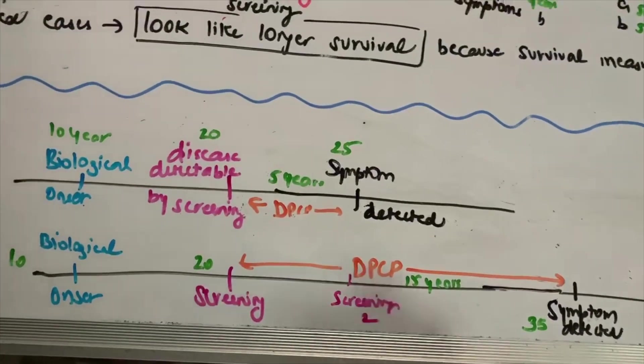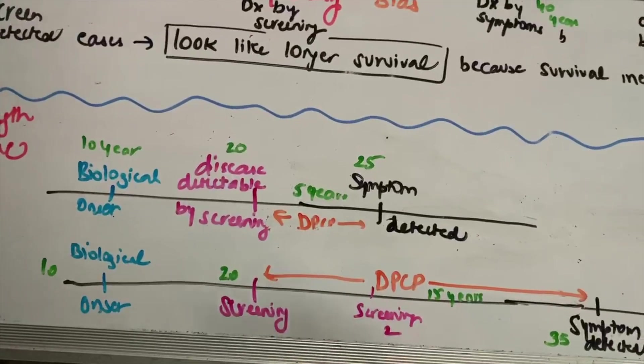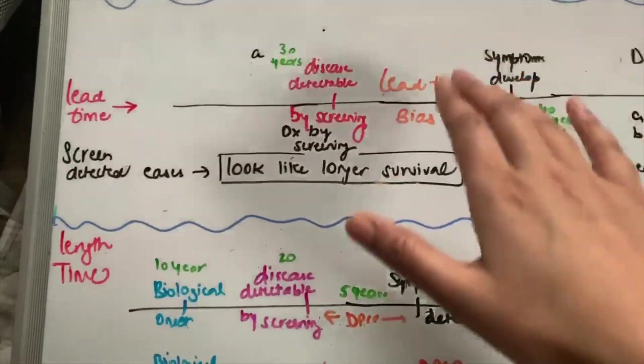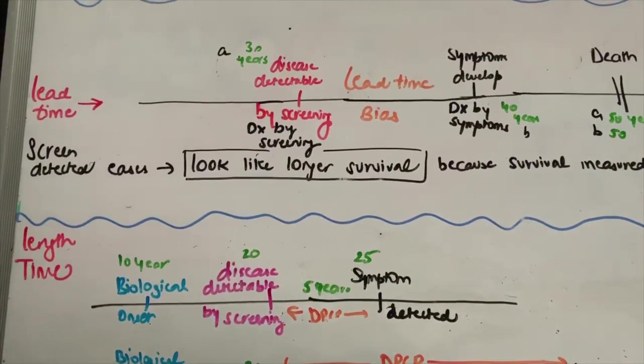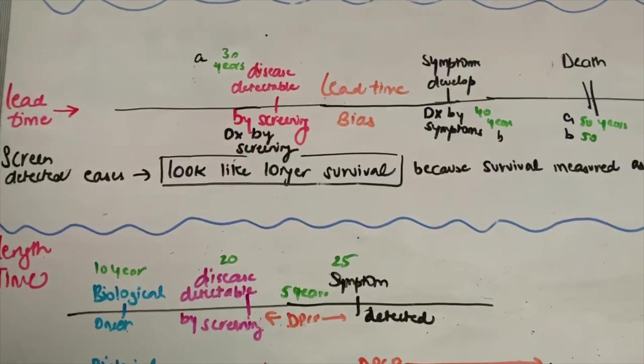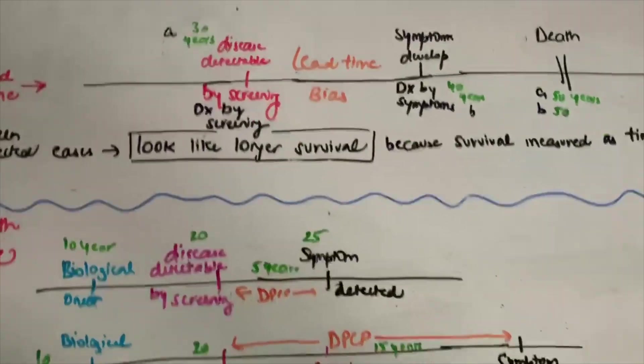So this is the main focus of length time bias, and I hope you guys understood the difference between lead time and length time. But if you want me to give more examples and go over something else, please let me know in the comments. And thank you so much for watching.